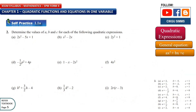Now let's see question 2: determine the values of a, b, and c for each of the following quadratic expressions. Remember that the general form of a quadratic expression is ax squared plus bx plus c. So a is the number in front of x squared, b is the number in front of x, and c is the constant — which has no x or x squared.